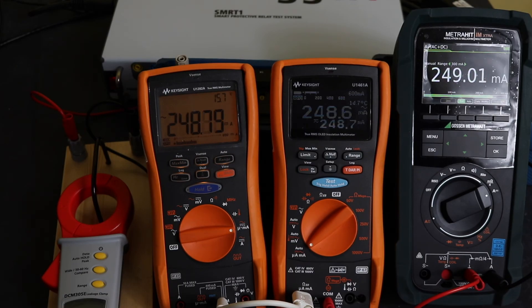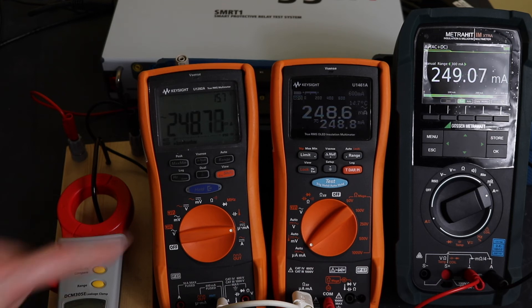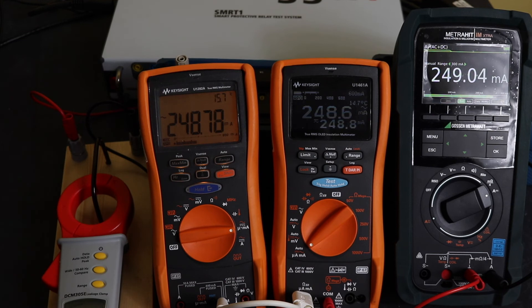So we're set up injecting 250mA through the three best meters I've got and the little earth leakage clamp that you can't quite see down there on the bottom left-hand side. So that's reading 252.8. U1282A is 248.76, 248.6 on the U1461A, and actually 249.08 on the MetroClip there. So yeah, that's interesting, isn't it?